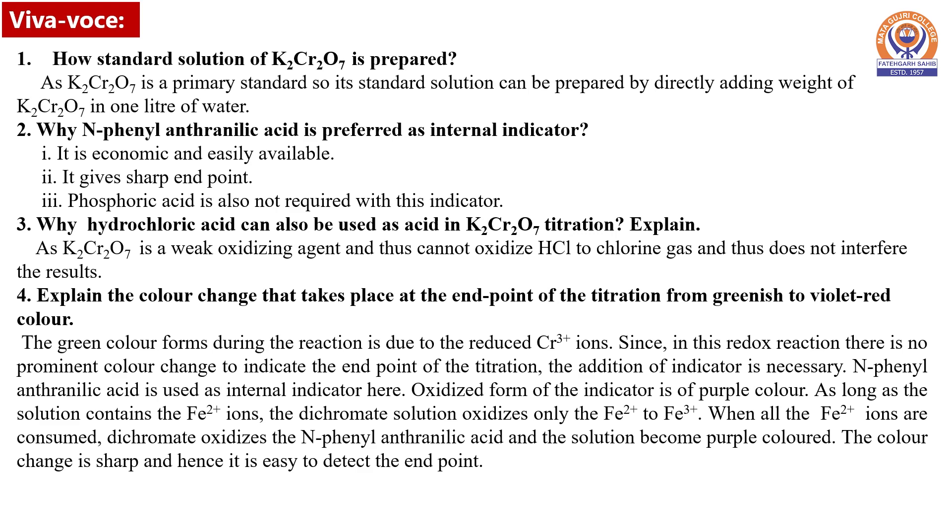Some questions for viva are: How is the standard solution of potassium dichromate prepared? Since potassium dichromate is a primary standard, its standard solution can be prepared by directly adding the known weight of potassium dichromate in one liter of water.